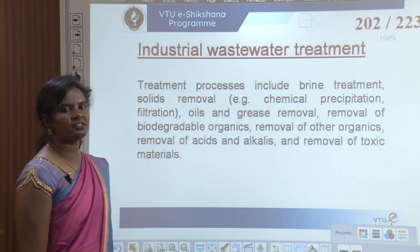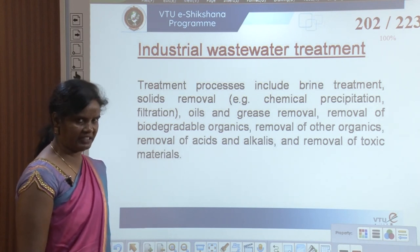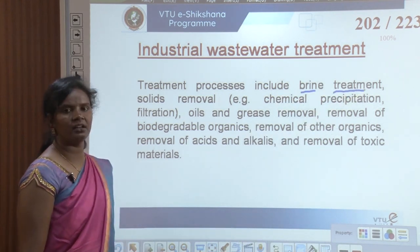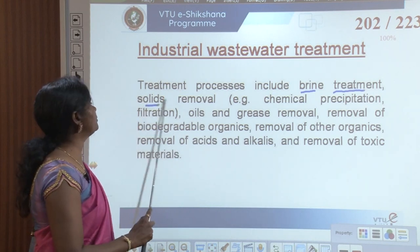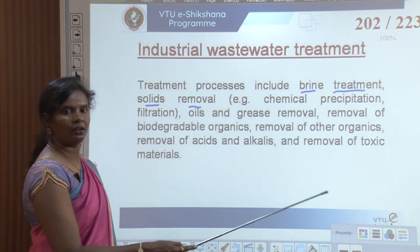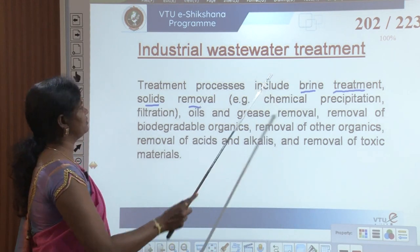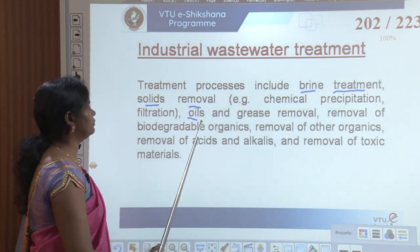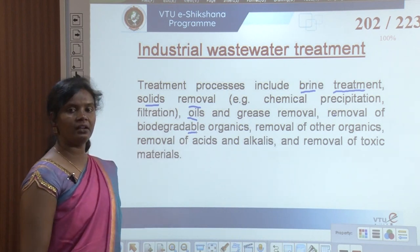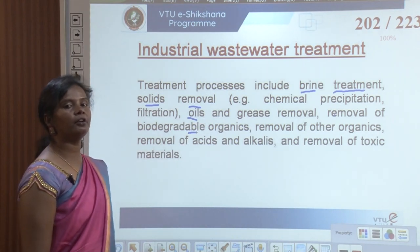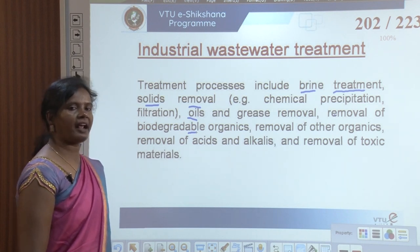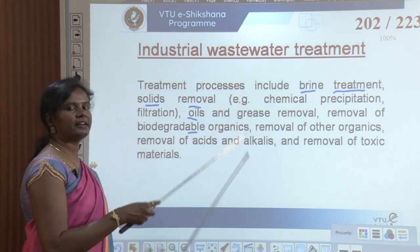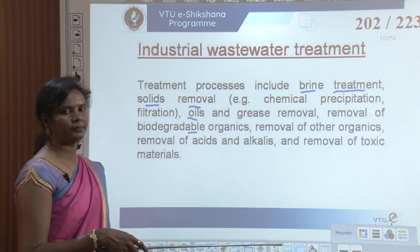Treatment processes for industrial wastewater include brine treatment, solids removal such as chemical precipitation and filtration, oils and grease removal, removal of biodegradable organics, removal of other organics, removal of acids and alkalis, and removal of toxic materials. If segregation and treatment are done at the source itself, it is better.